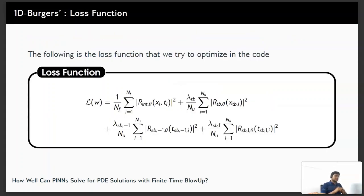Now following is the loss function that we try to optimize in the code. First we have the functional loss followed by the initial condition residuals and the boundary condition residuals.